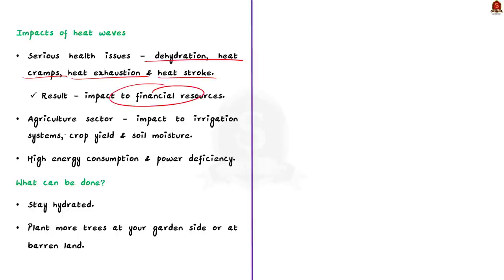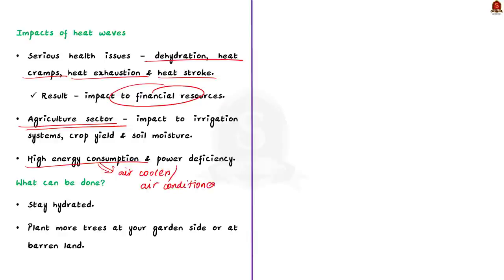Secondly, heat waves adversely affect the agricultural sector because they affect irrigation systems, crop fields, and soil moisture. Thirdly, heat waves are associated with high energy consumption. During heat waves, to keep ourselves cool, we need extra electricity to operate air coolers or air conditioners. This leads to high energy consumption and even results in power deficiency. These are some of the impacts of heat waves.